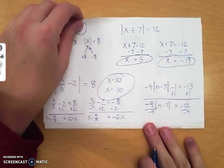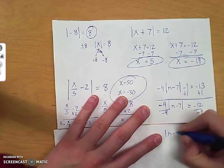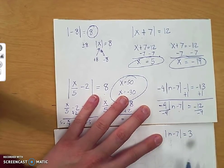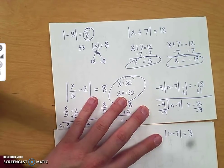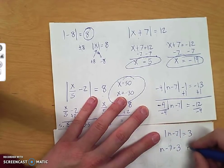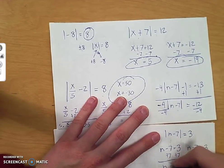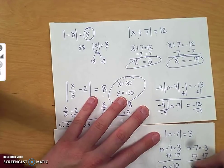And I get the absolute value of n minus 7 equals 3. Now that the absolute value is by itself, I can do the positive and negative. n minus 7 equals 3. n minus 7 equals negative 3. Add 7 to both sides, n equals 10. Add 7 to both sides, n equals 4.